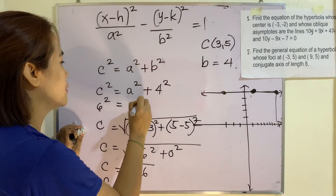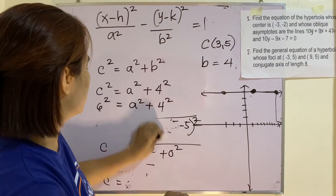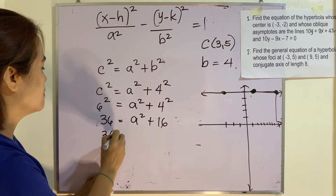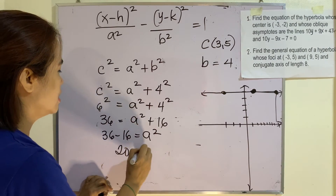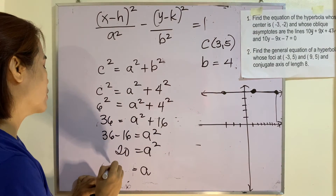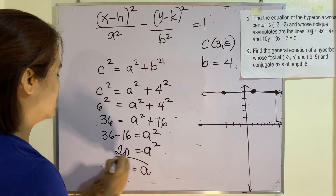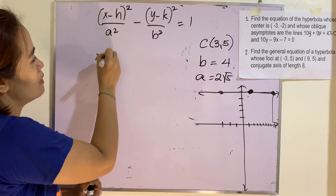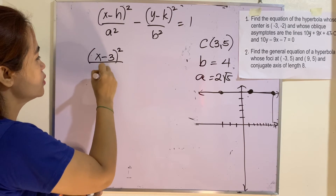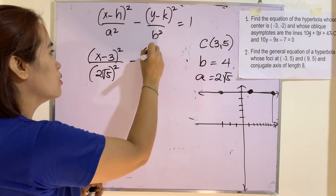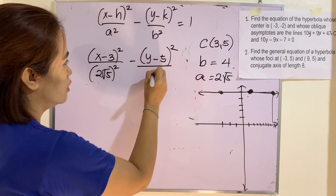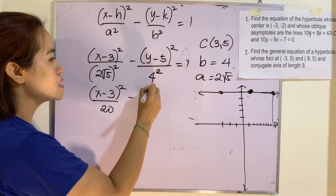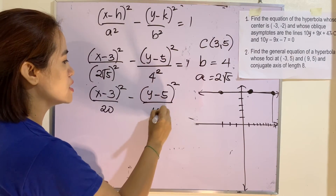So c equals 6. Using c squared equals a squared plus b squared: 36 equals a squared plus 16, so a squared equals 36 minus 16 equals 20, and a equals 2 root 5. The standard form is: (x minus 3) squared over 20 minus (y minus 5) squared over 16 equals 1.